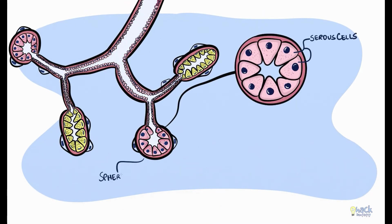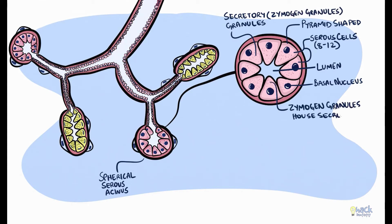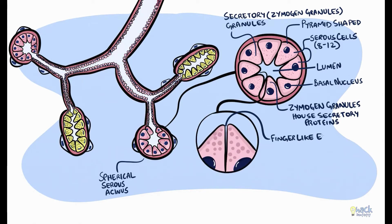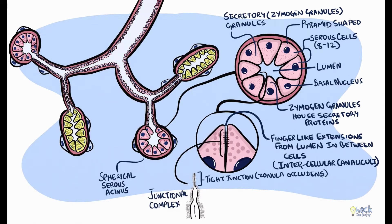Serous cells are housed in spherical acini and may be 8 to 12 in number surrounding a central lumen. A serous cell is pyramid-shaped with a basal nucleus and numerous secretory granules in the apical cytoplasm. These granules are called zymogen granules and house salivary macromolecules or proteins. The lumen of the serous acinus has finger-like extensions that continue between the serous cells, called intercellular canaliculi. The cells are joined to each other on the lateral surfaces through junctional complexes, each made of a tight junction, an adhering junction, and a desmosome.